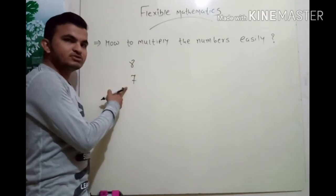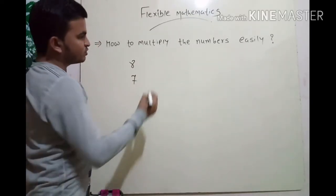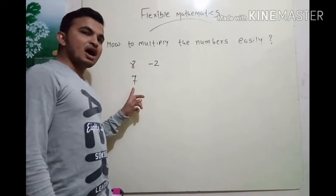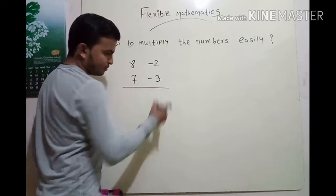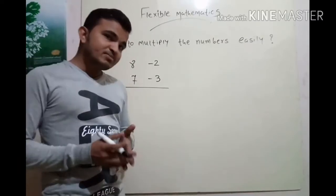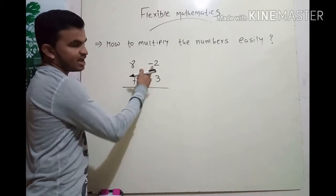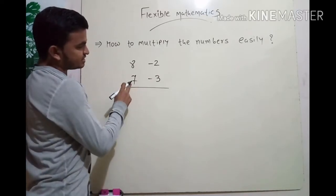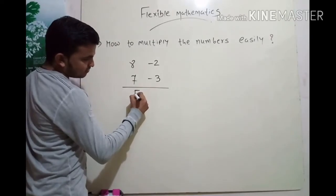8 is less than 10 and 7 is also less than 10. Now, 8 is less than 10 by how much? By 2. So here you write minus 2. And 7 is less than 10 by how much? By minus 3. Now the next step is to do a cross subtraction. If you subtract 8 and 3, the answer will be 5. And if you subtract 7 and 2, the answer will also be 5. So here we write the answer 5.